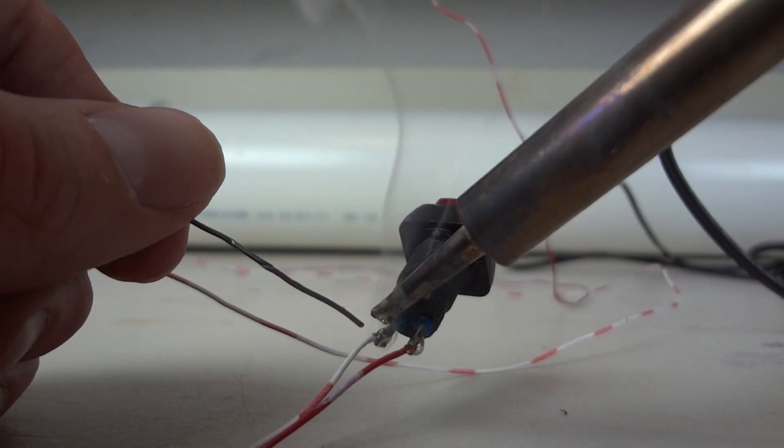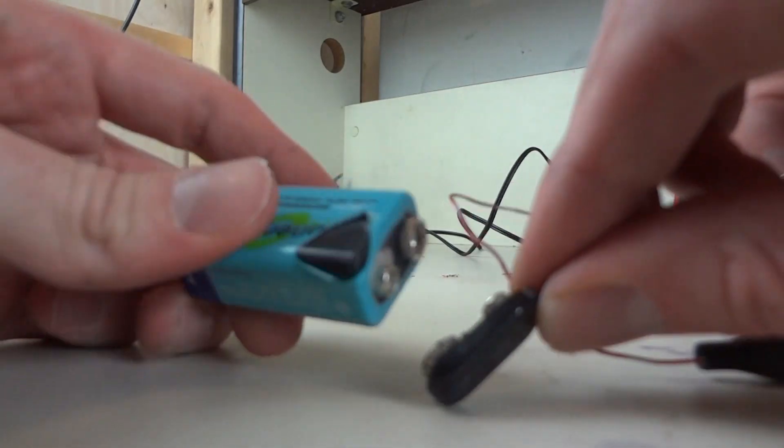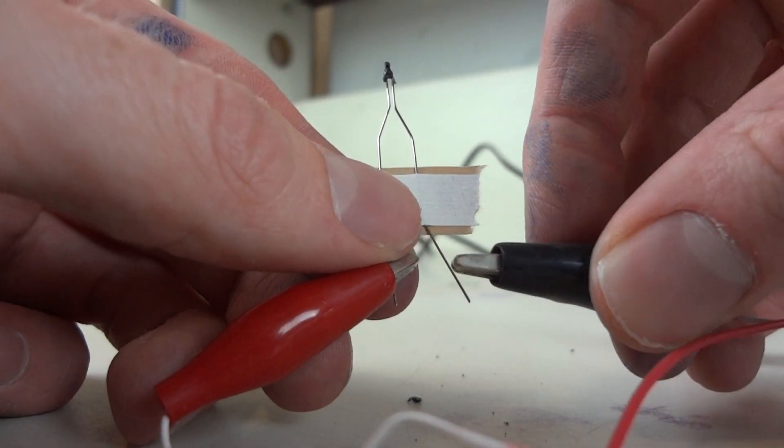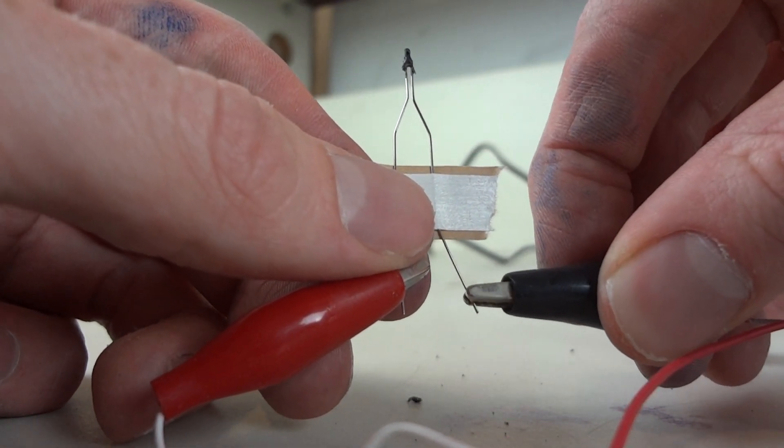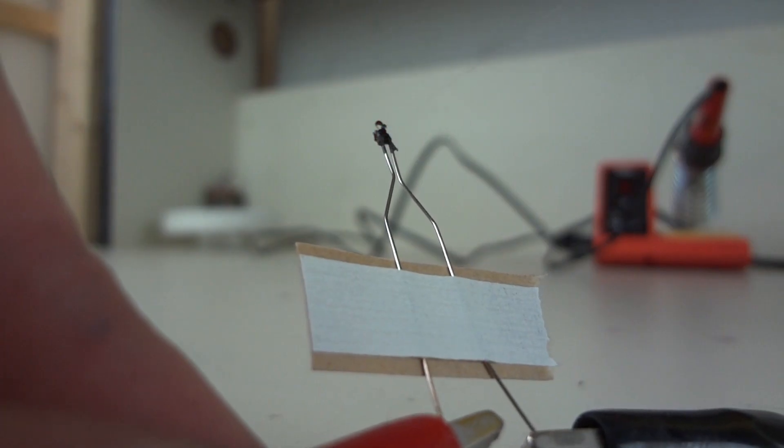The ignition system for this rocket launcher consists of a push-button switch, a 9-volt battery, and two alligator clips, all soldered together in series. When the button gets pushed, a short is created, lighting the igniter.